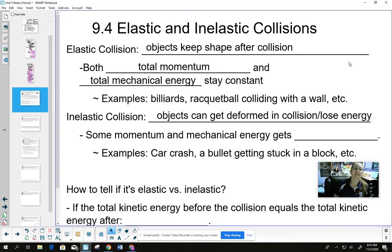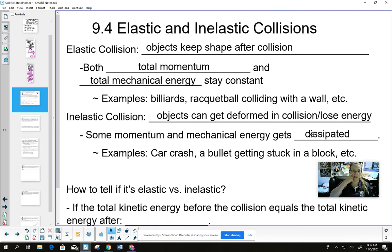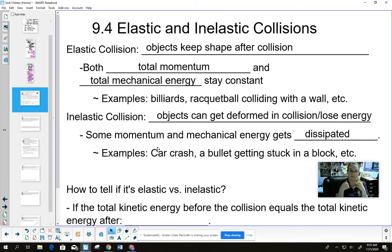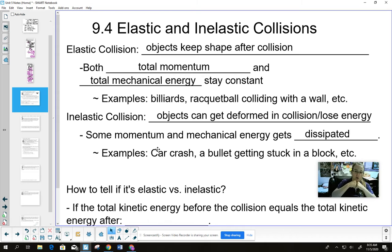We also have what's called an inelastic collision, which we haven't talked about much. This is where objects can get deformed in a collision or lose energy — some of that momentum and mechanical energy gets dissipated. Think about a car crash: some of the momentum and mechanical energy is lost because the cars get deformed. Some of that kinetic energy goes into heating and causes the cars to deform.